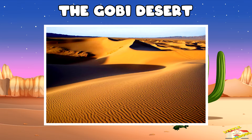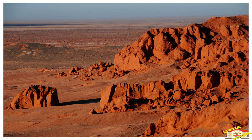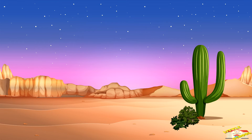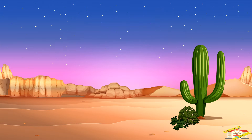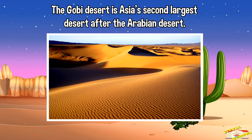The Gobi Desert is located in eastern Asia and is the world's largest cold desert. This desert spreads from Mongolia to China. The Gobi Desert is Asia's second largest desert after the Arabian Desert.